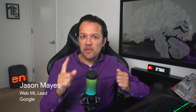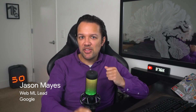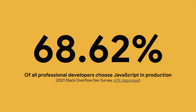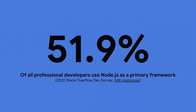Let's talk about machine learning in JavaScript. Currently, over 68% of professional developers use JavaScript in production, and we have over 51% of developers using Node.js as a primary framework in production too.